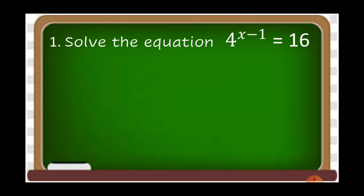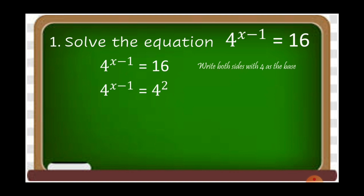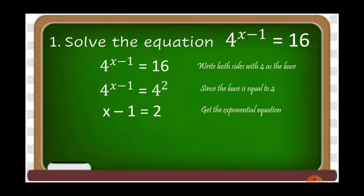Let's try to solve the equation: 4 raised to (x minus 1) is equal to 16. We'll work with 4 as the base. We're going to change 16 to base 4, which is equal to 4 squared. So we have now 4 raised to (x minus 1) is equal to 4 squared. Since the bases are equal, we get the exponent equation: x minus 1 is equal to 2.